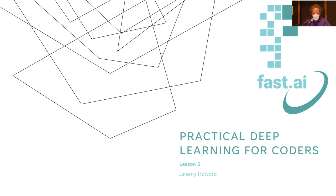Hi everybody, and welcome to Practical Deep Learning for Coders Lesson 5. We're at a stage now where we're going to be getting deeper and deeper into the details of how these networks actually work. Last week we saw how to use HuggingFace Transformers to train a nice NLP model, and today we're going back to tabular data and building a tabular model from scratch — a couple of different types, actually.